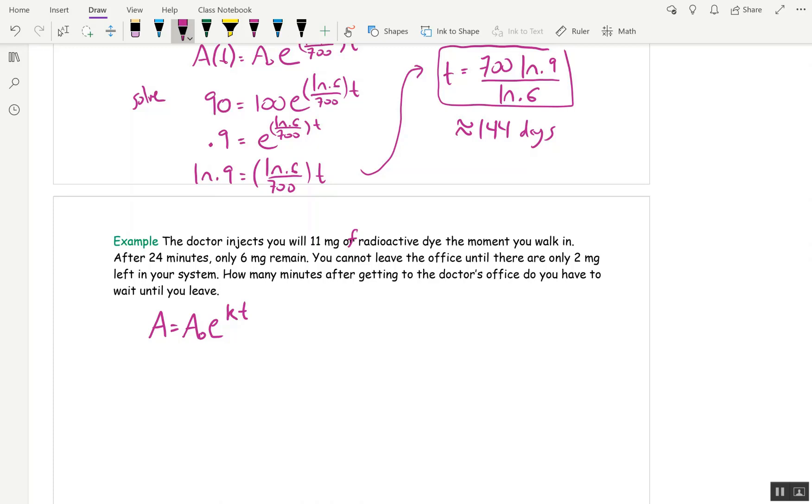6 milligrams remain. So our A₀ here, the initial amount is 11 milligrams. And we're told that A of 24 minutes is 6. And eventually what we want is when is A(t) down to 2 milligrams, because that's when you can leave. So we need many things here. First of all, we need k. So we're going to find k.